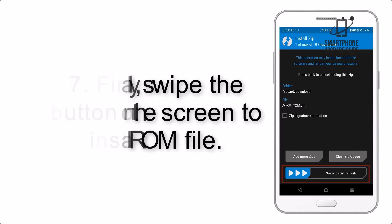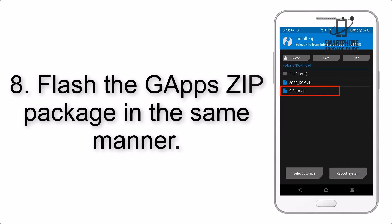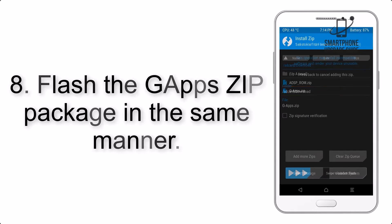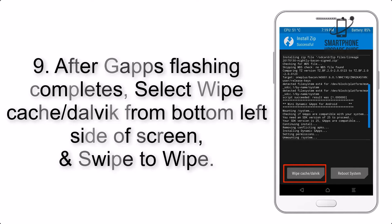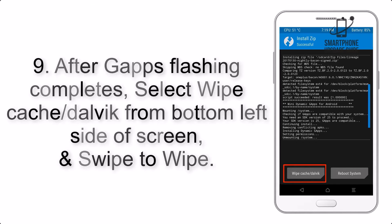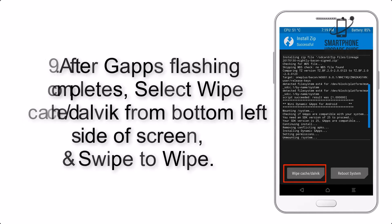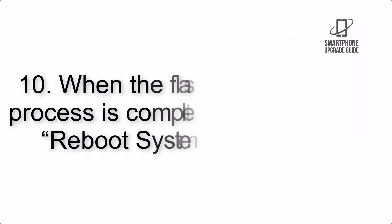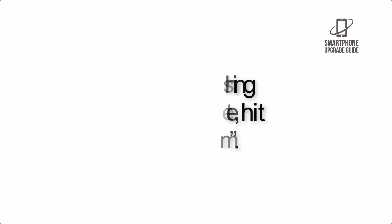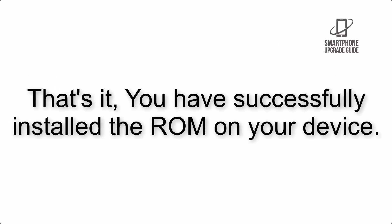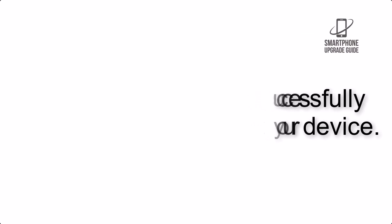Step 7: Swipe the button on the screen to install the ROM file. Step 8: Flash the GApps zip package in the same manner. Step 9: After GApps flashing completes, select Wipe Cache and Dalvik from the bottom left side of the screen and swipe to wipe. Step 10: When the flashing process is complete, hit Reboot System. That's it — you have successfully installed the ROM on your device.